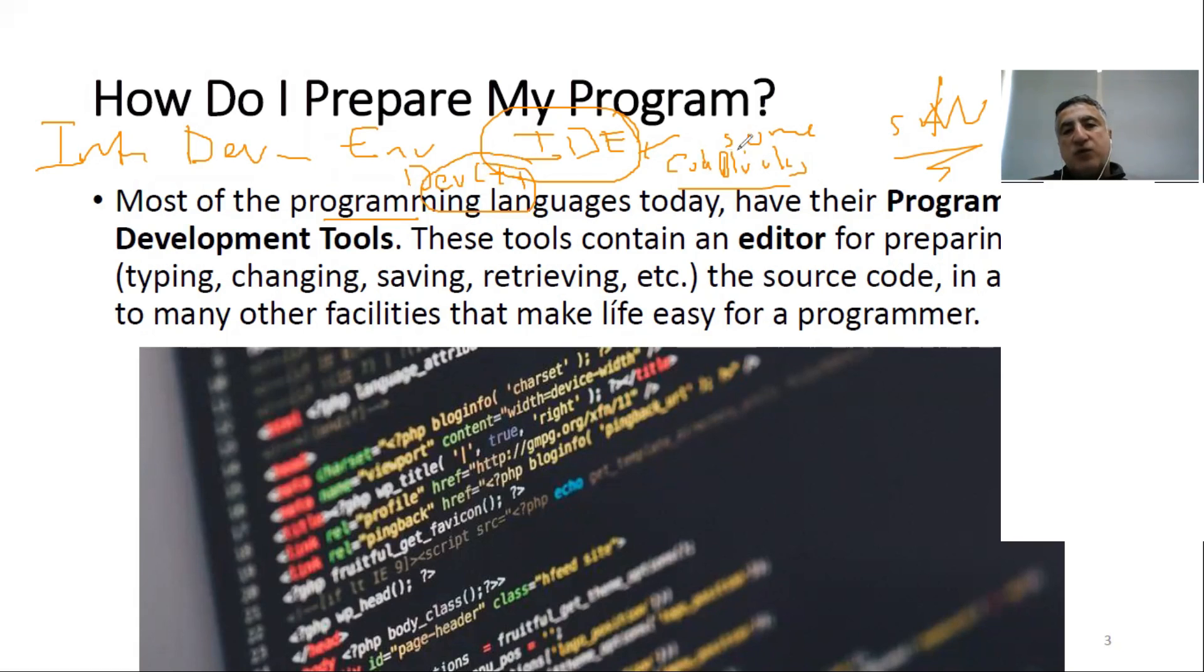These are two examples of integrated development environment. And in the environment, you will have some softwares. One of the part of the software is just an editor. In the editor, as you see here, you just write your source code. It looks like PyCharm, Visual Studio is another kind of integrated development environment.